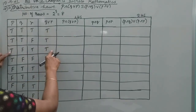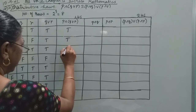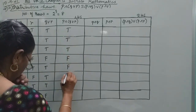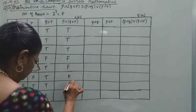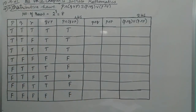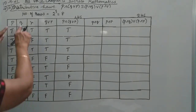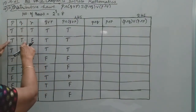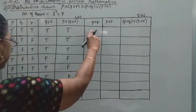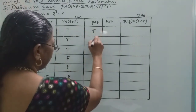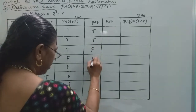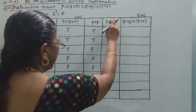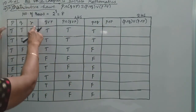So the truth values here are T, T, T, T, T. Here is P cap of Q cup R — this one is P cap of Q cup R, same as Q cup R. So this column is P cap of Q cup R.